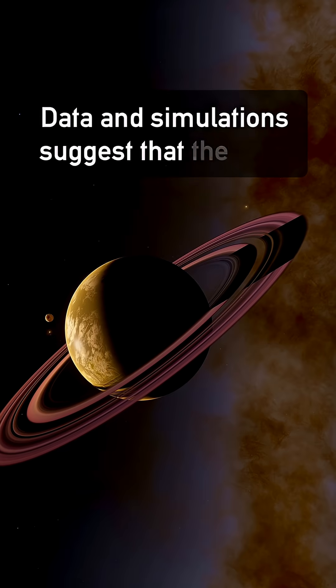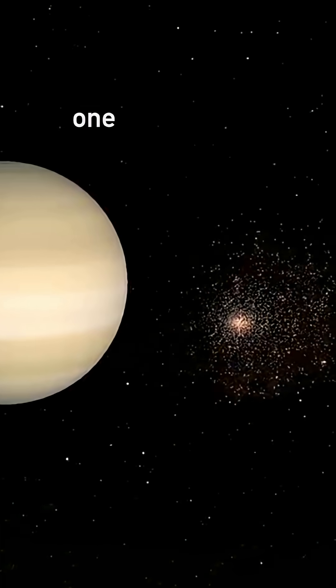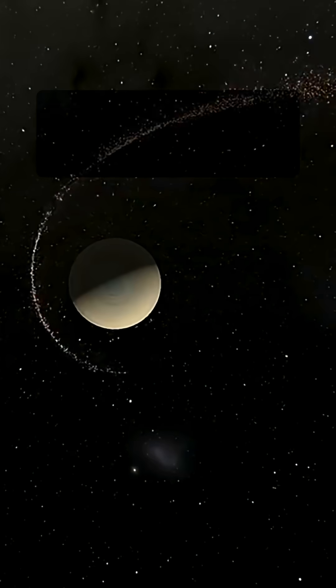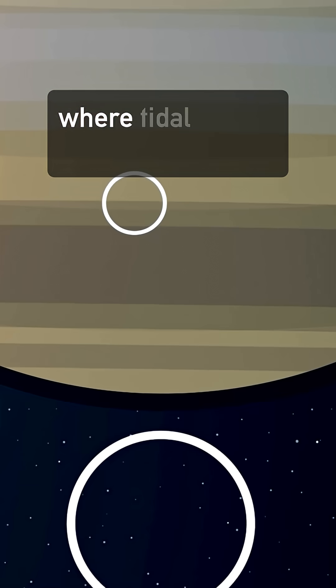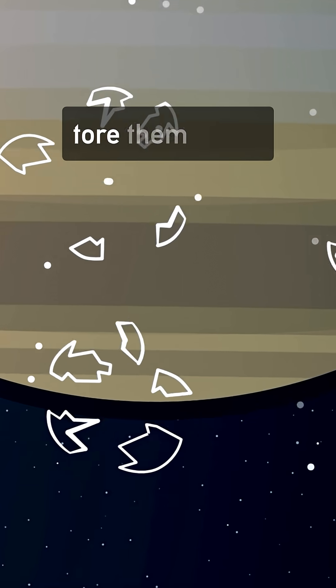Data and simulations suggest that the rings likely formed when one or more icy moons spiraled inward and collided, crossing Saturn's Roche limit where tidal forces finally tore them apart.